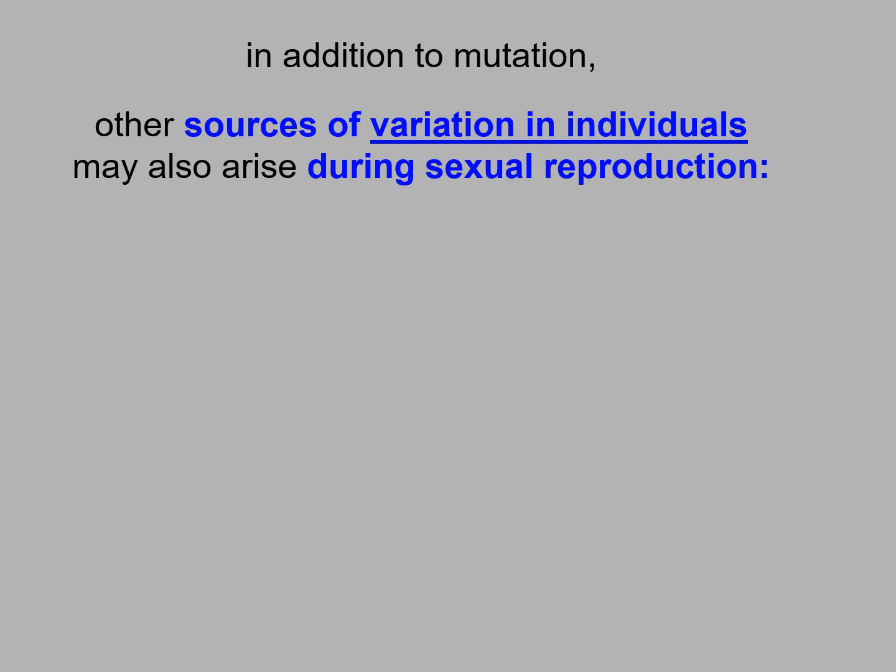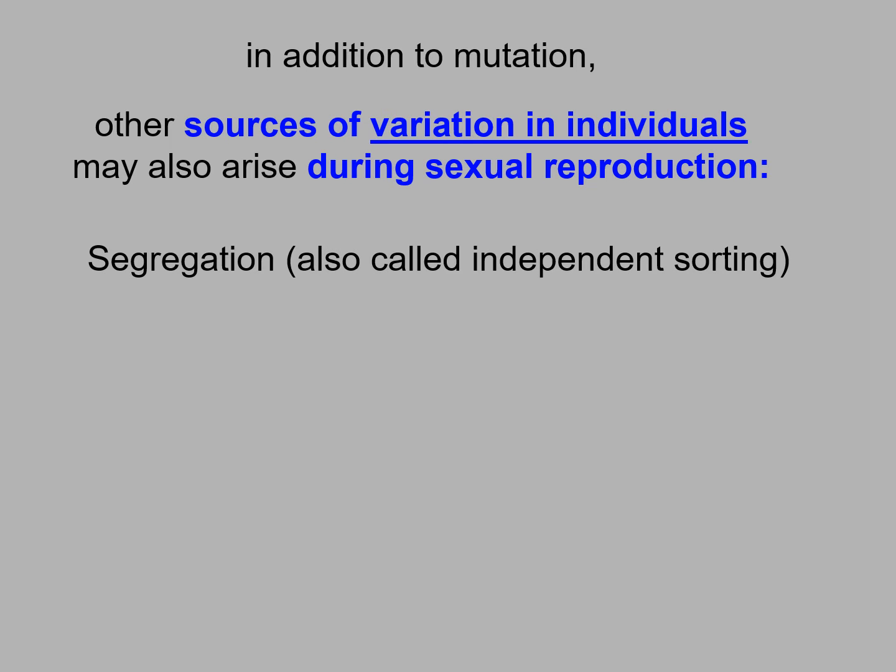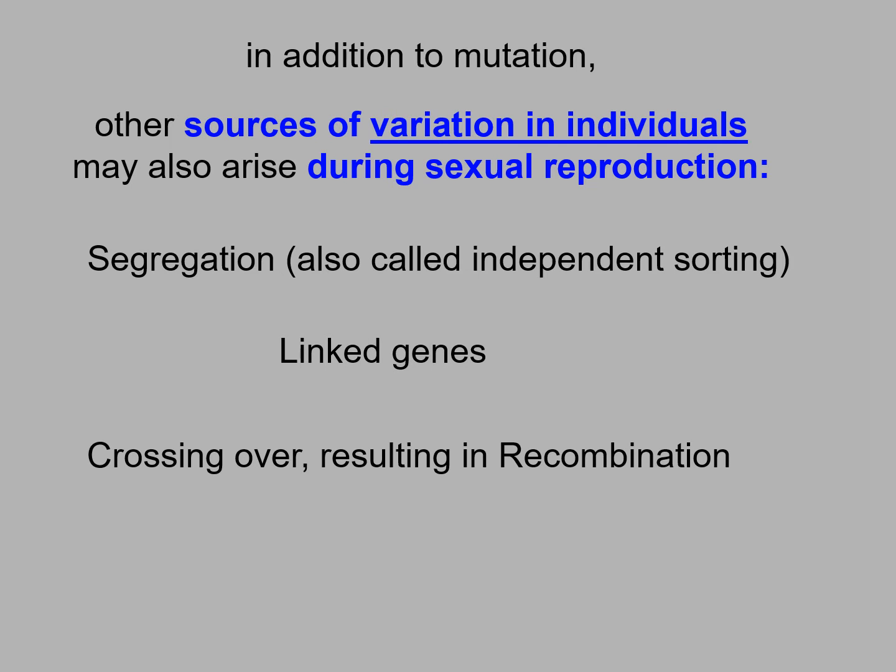In addition to mutation, other sources of variation in individuals may also arise during sexual reproduction. These include segregation, which is also called independent sorting, linked genes, and recombination, which results from crossing over.